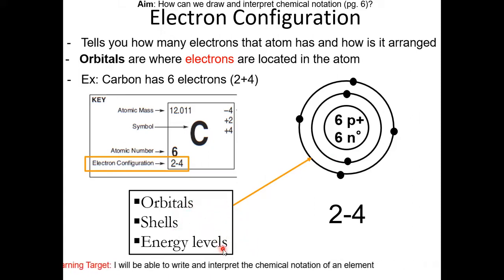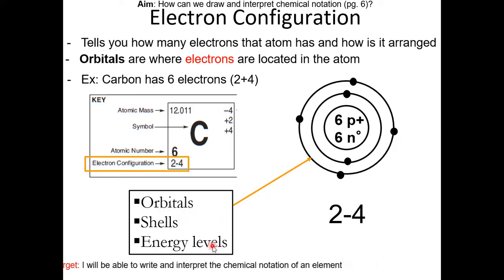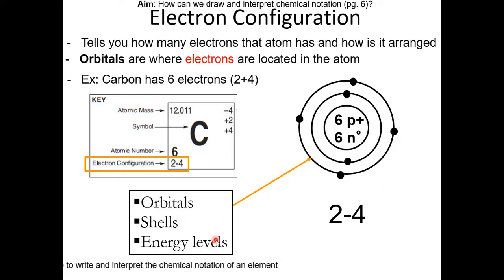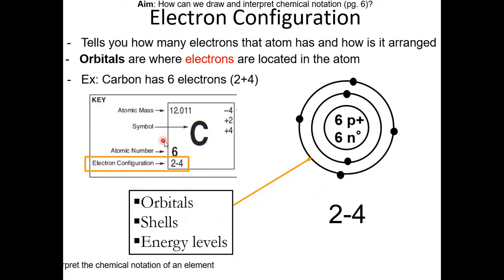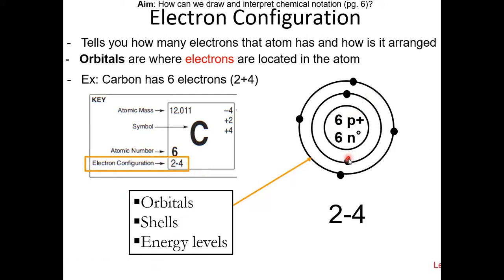There is a slight difference between orbitals and energy levels, which will be discussed in a future PowerPoint. But for now, they basically mean the same thing and are used interchangeably. Looking at the electron configuration, 2-4 means there are 2 electrons in the first shell and 4 electrons in the second shell.